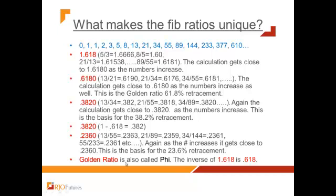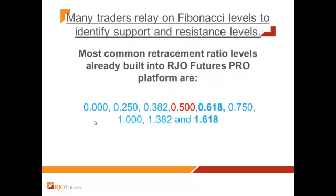Those are the main retracement levels. The golden ratio, commonly referred to as 1.6180, and its inverse 0.6180, are important because these ratios are found everywhere in nature. Market technicians pay attention to natural fluctuations in commodity prices or equity prices. You can apply these retracement levels to any tradable instrument in any timeframe.